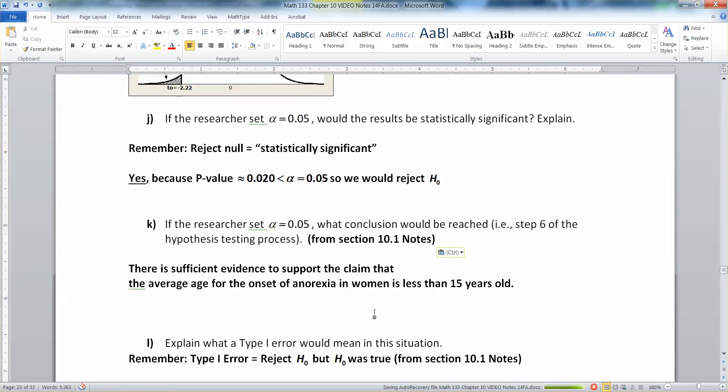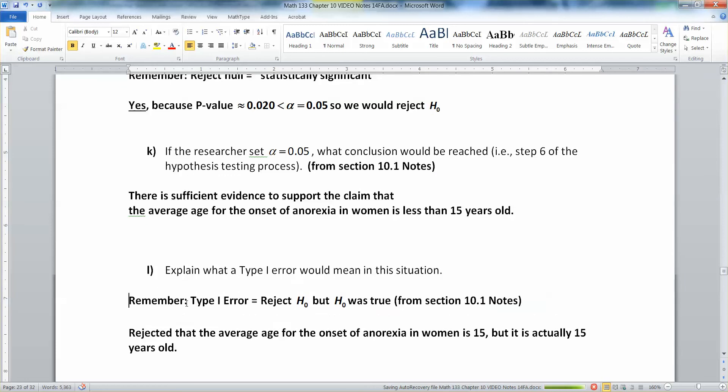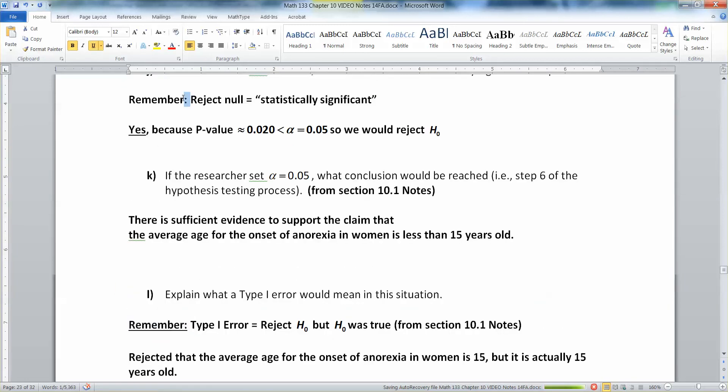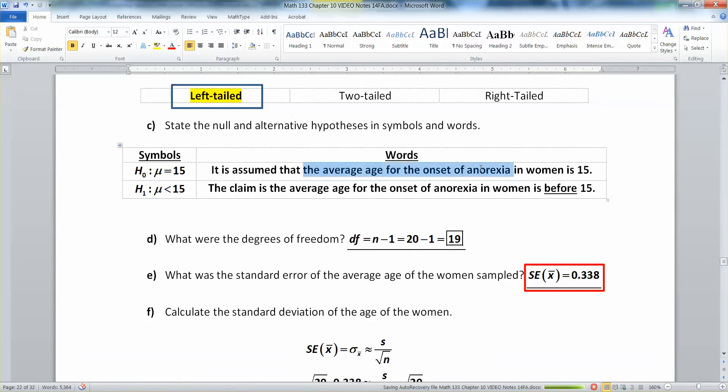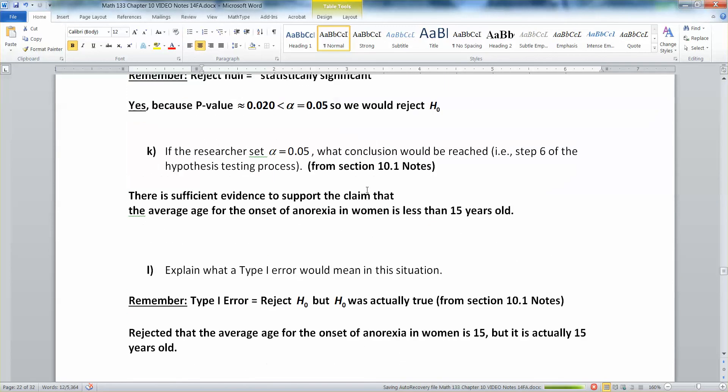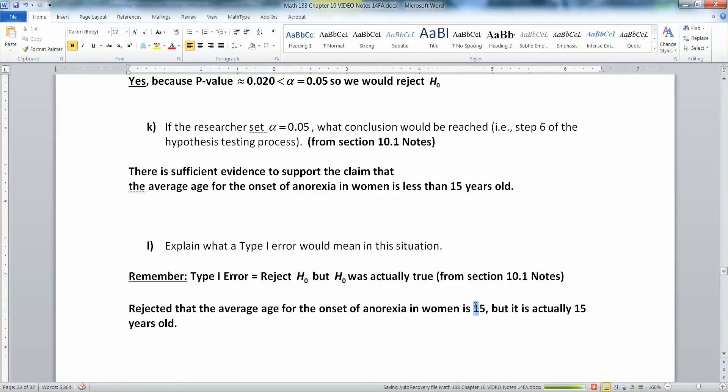All right so now we need to remember what it means to make a type 1 error in this situation. Remember from section 10.1 that type 1 error means you rejected the null hypothesis but the null hypothesis was actually true. Like you are somehow magically able to know that it's really true. In a real problem we don't ever really know if things are true or not but we're pretending we somehow know. All right so if that's the case then we rejected that H0. We rejected H0 if you recall was that the average age for the onset of anorexia is 15. So we said oh no no I reject that. So you rejected that the average age for the onset of anorexia nervosa in women is 15 but it is actually 15. So you said it wasn't 15 anymore but it actually still is.